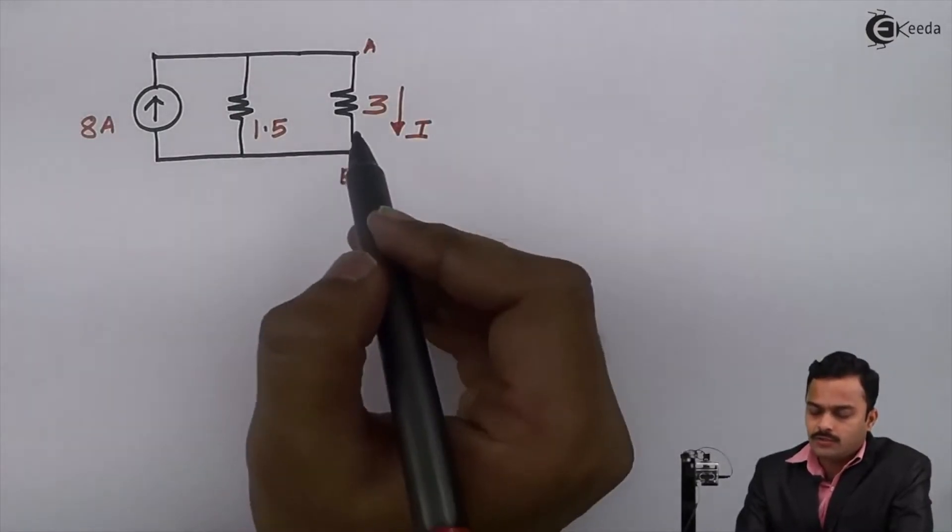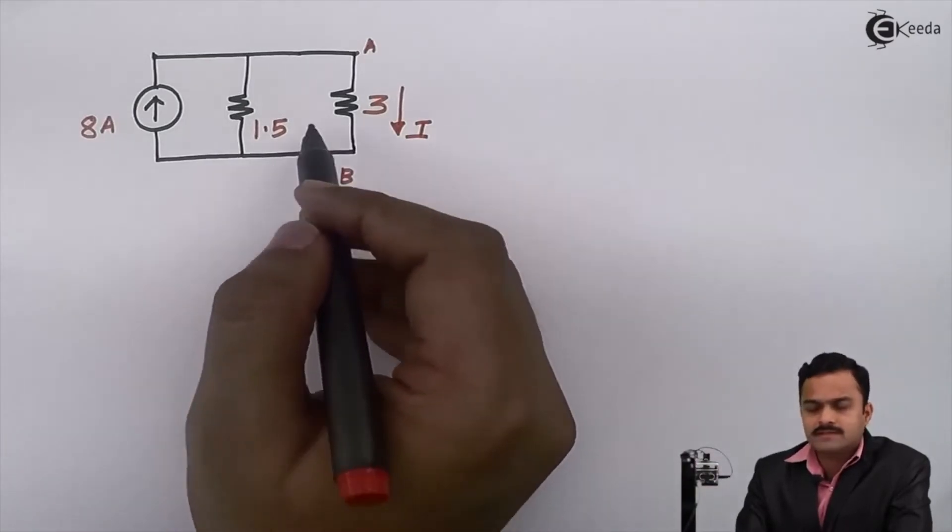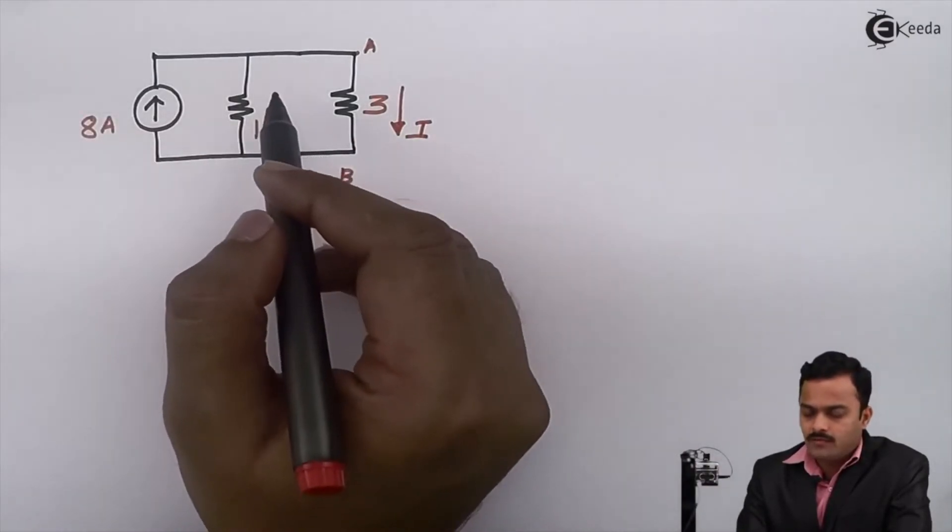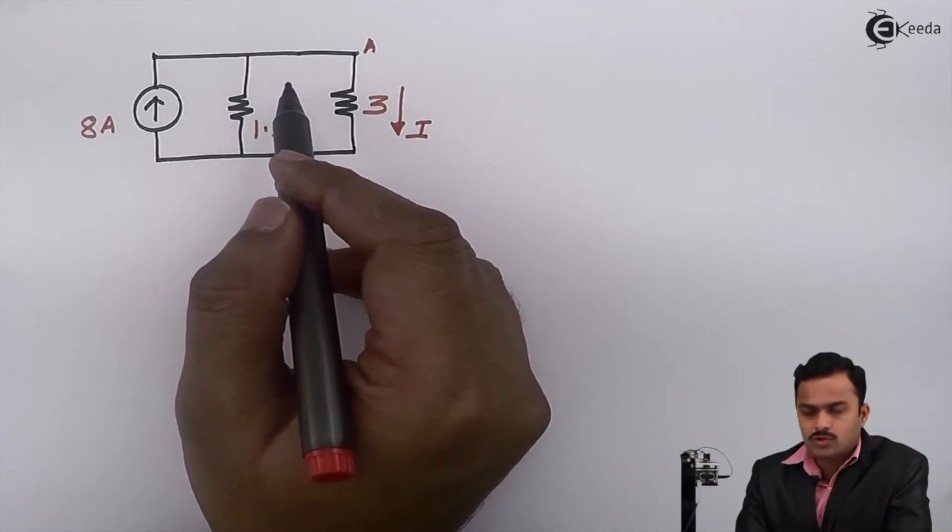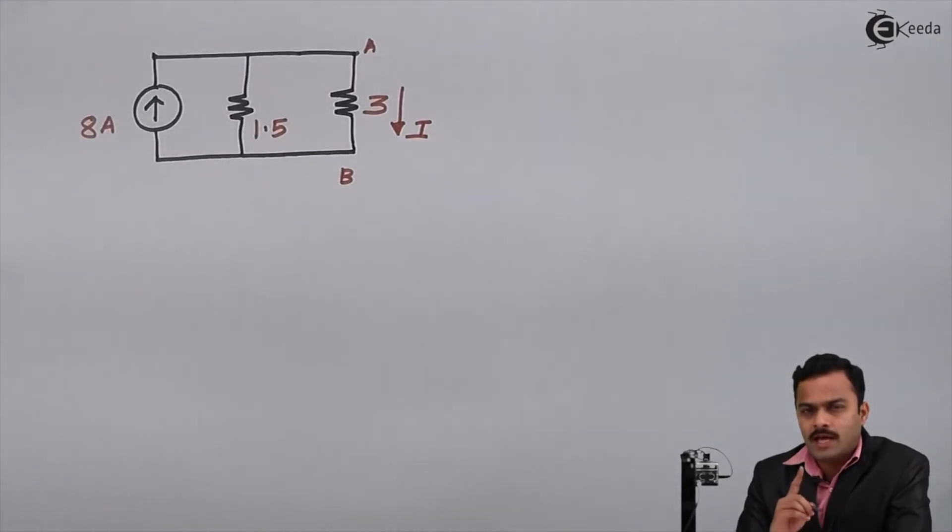Now here you have a choice: either you can use current divider rule and get the answer, or you can further simplify and make one voltage source, so that ultimately you have only one source and one resistor. I will do that.